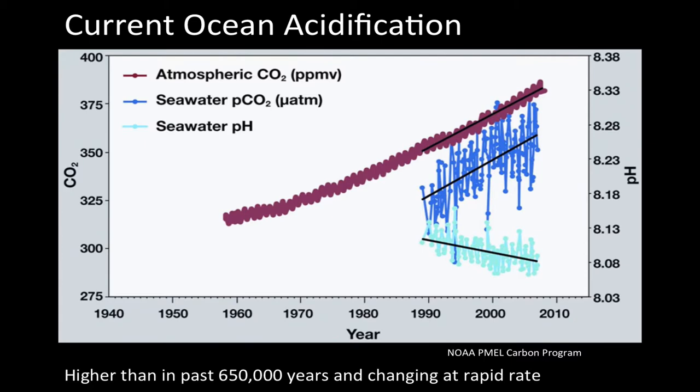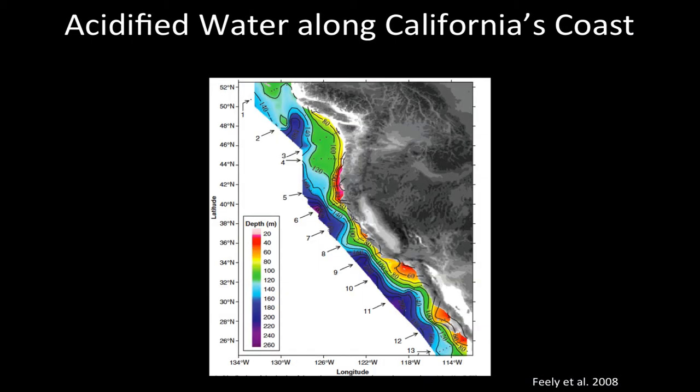Along California's coast, we're already seeing acidified conditions. In this map, the gray is California and the colored parts are the ocean. The warm colors represent increasingly acidified conditions and the cool colors like blues are not acidified. So we're seeing acidified water really close to our coast.